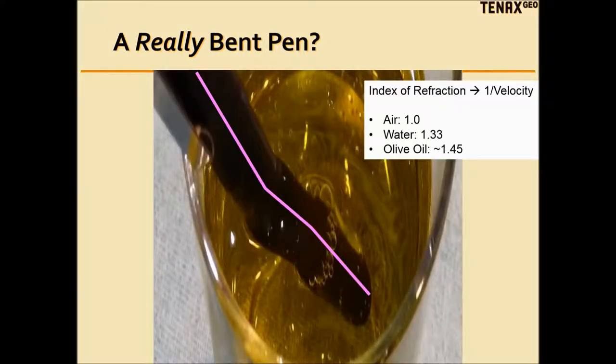If you don't believe me, check out the zoom view to see the pen bent into three segments. The property that governs the amount of refraction is called the index of refraction. It's actually the inverse of velocity. The index of refraction of olive oil is closer to water than it is to air. This explains why the bending across the oil-water interface is less than the bending across the air-oil interface.